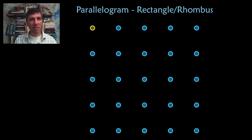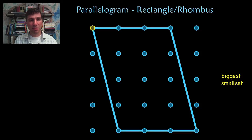A parallelogram that is neither a rectangle nor a rhombus. Think about that. Turn off the video. Try to figure out the biggest parallelogram and the smallest parallelogram. Here is the biggest one and here is the smallest one.